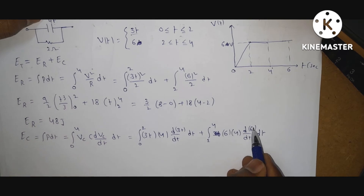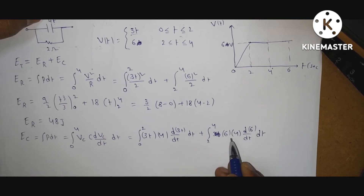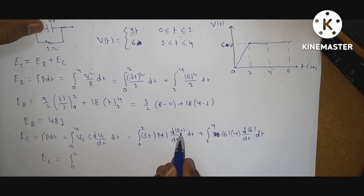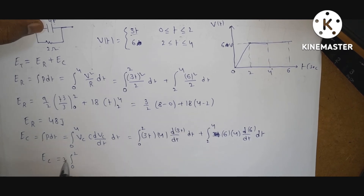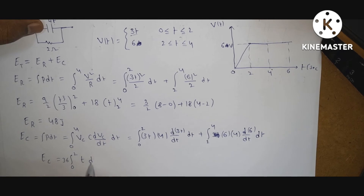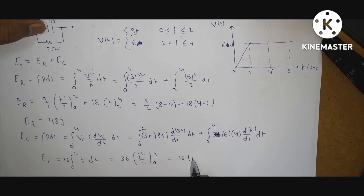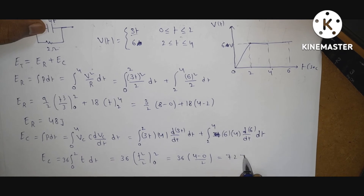Applying the remaining term from 0 to 2: 3t into 4 into 3 gives 36t. So Ec equals integral from 0 to 2 of 36t dt, which equals 36 into t² by 2 from 0 to 2, giving 18 into 4 equals 72 joules.